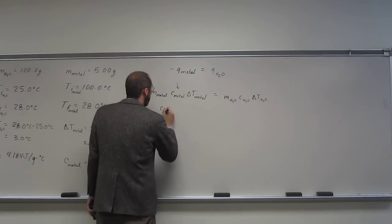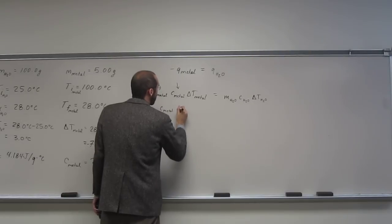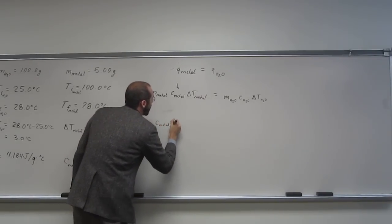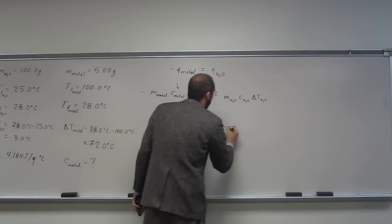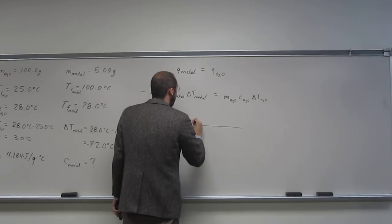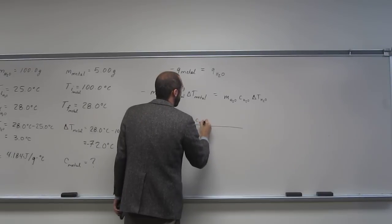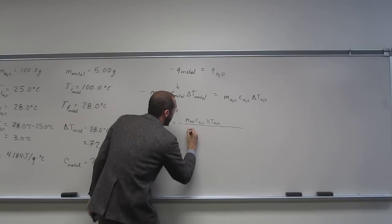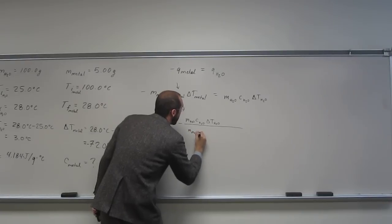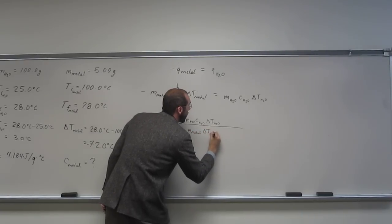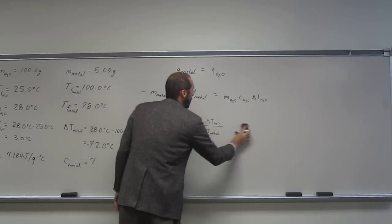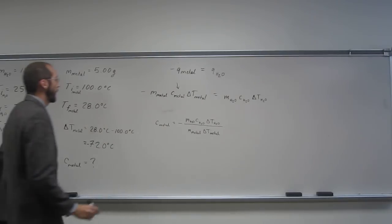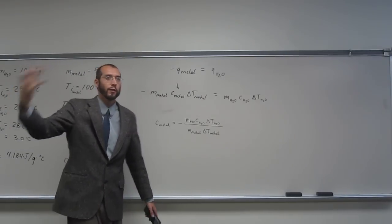So C metal is going to be equal to negative M water, C water, delta T water, over negative M metal times delta T metal. Is everybody okay with that sort of rearranging of the equation? If not, state your piece.